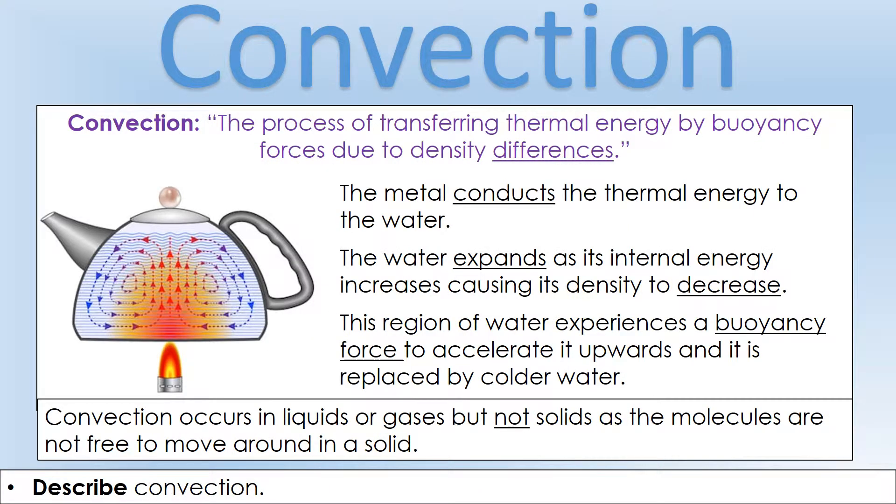Our second method of thermal energy transfer is convection. Conduction relies on collisions, convection relies on density differences. We've got a kettle here, and the metal on its base is going to conduct thermal energy from the flame to the water. The water that's nearest the heat source is going to increase its internal energy, and as its internal energy increases, it's going to expand or its volume is going to increase.